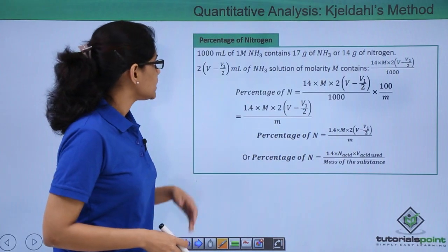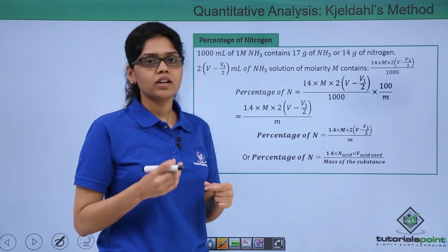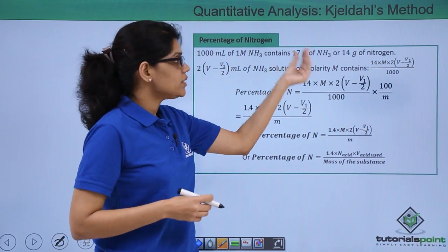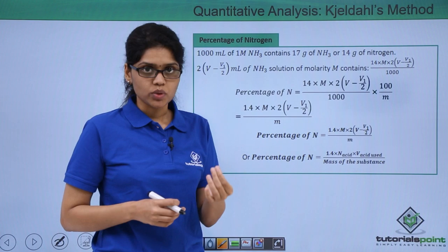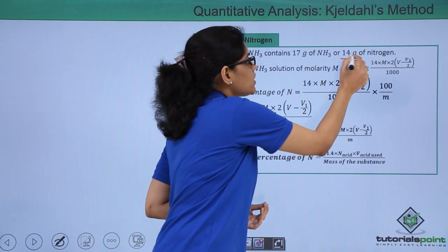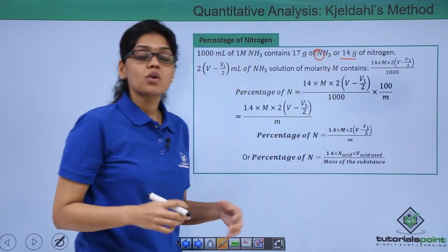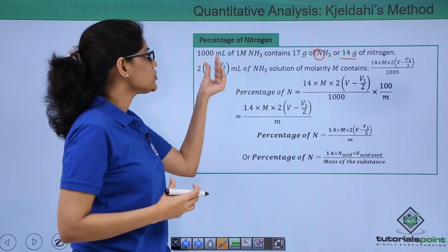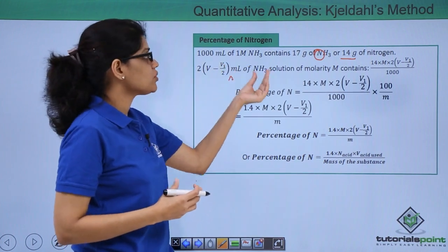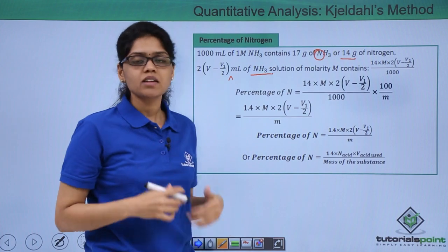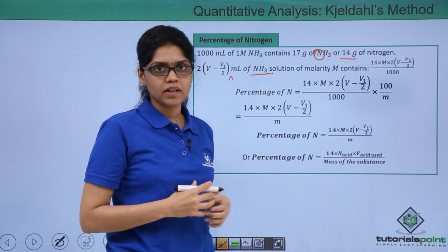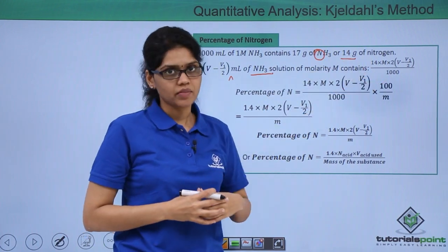You can easily see that 1000 ml of 1 molar ammonia solution will contain 17 grams of ammonia or 14 grams of nitrogen. So how much nitrogen will be contained in 2 × (V - V1/2) ml of ammonia solution? That can be obtained by simply cross multiplying and you get this as a final value.